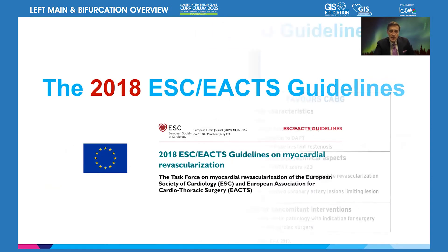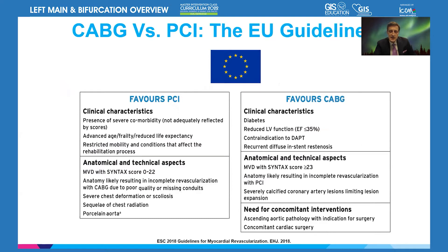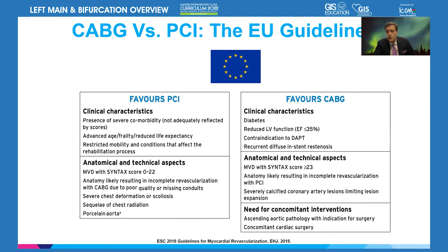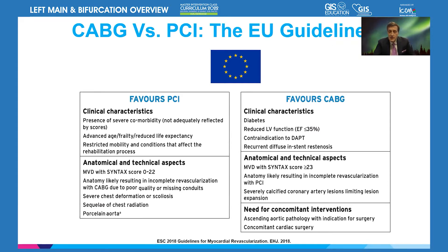The 2018 ESC guidelines show a clinical approach. Factors that favor PCI include the presence of severe comorbidities — active cancer, cancer in remission, frailty, severe anemia, severe or moderate Parkinson's. No score is going to control for all of them. These characteristics favor PCI based on heart team, referring physician, and patient preferences. Anatomically, a more limited CAD — no other lesions but the left main — is the ideal candidate for PCI.